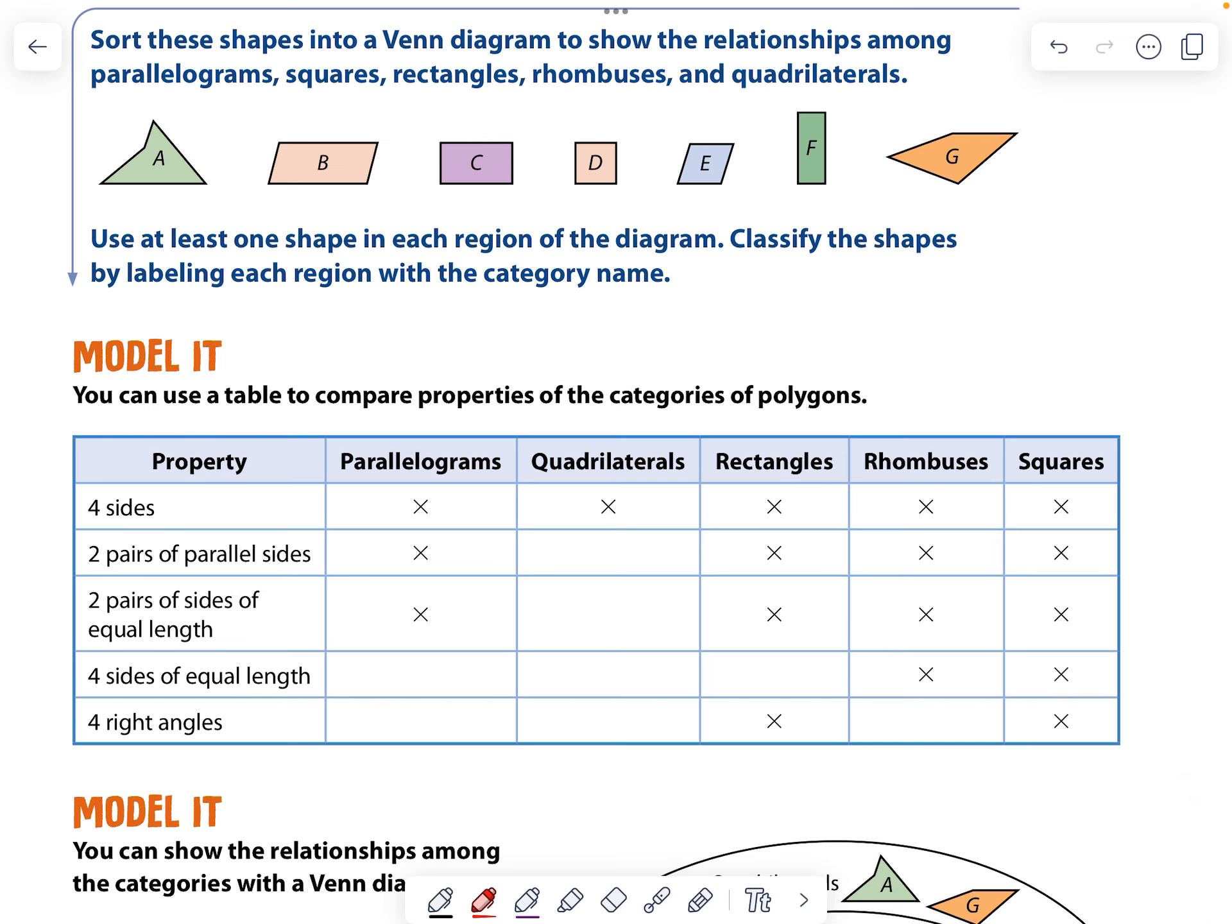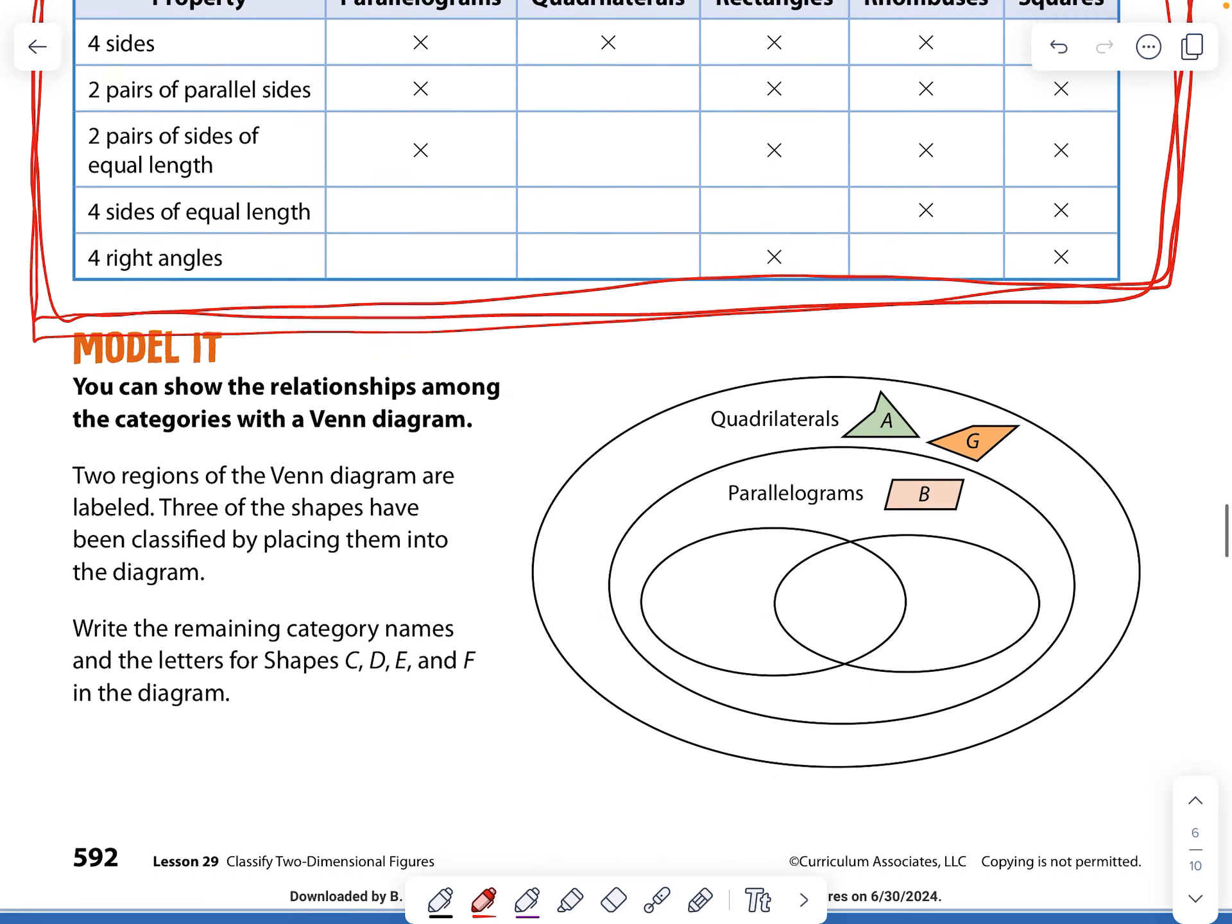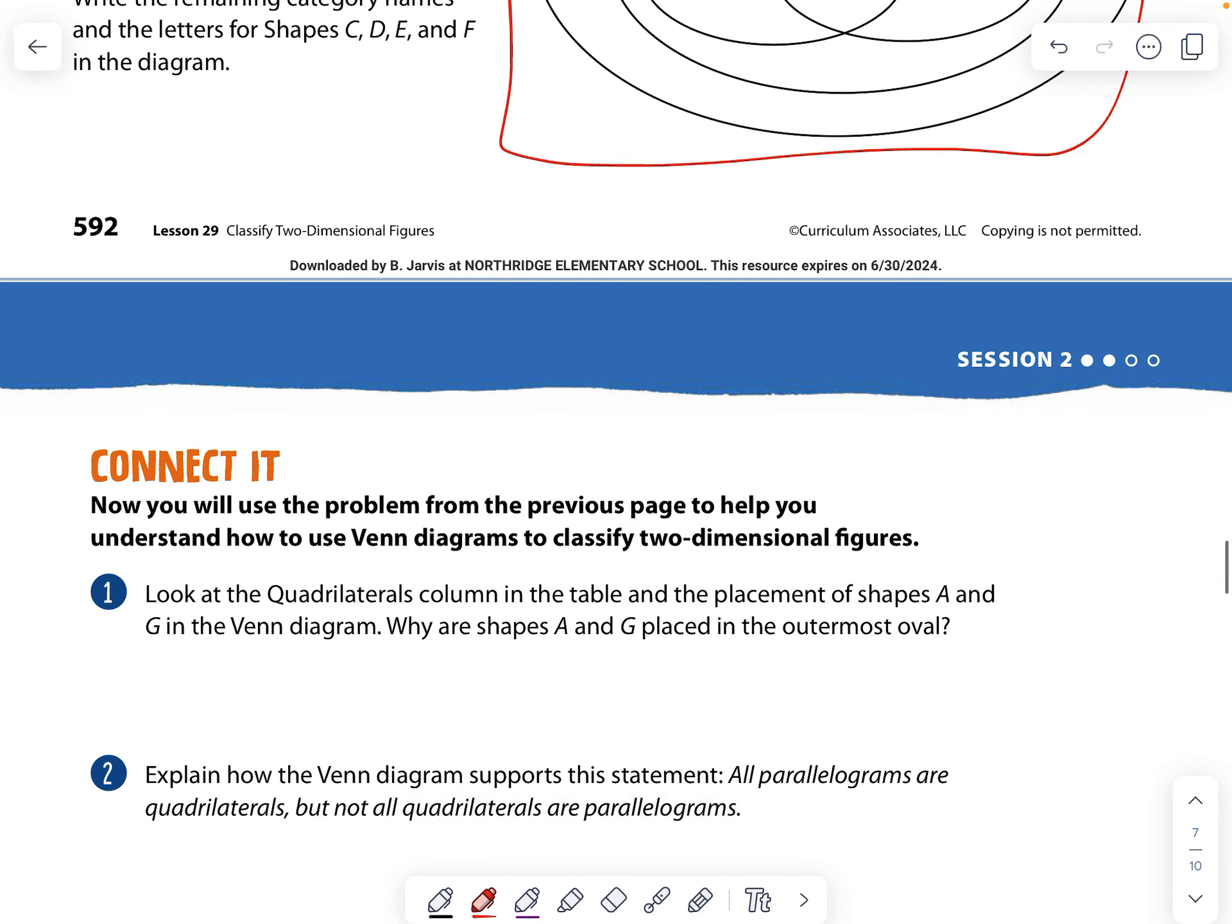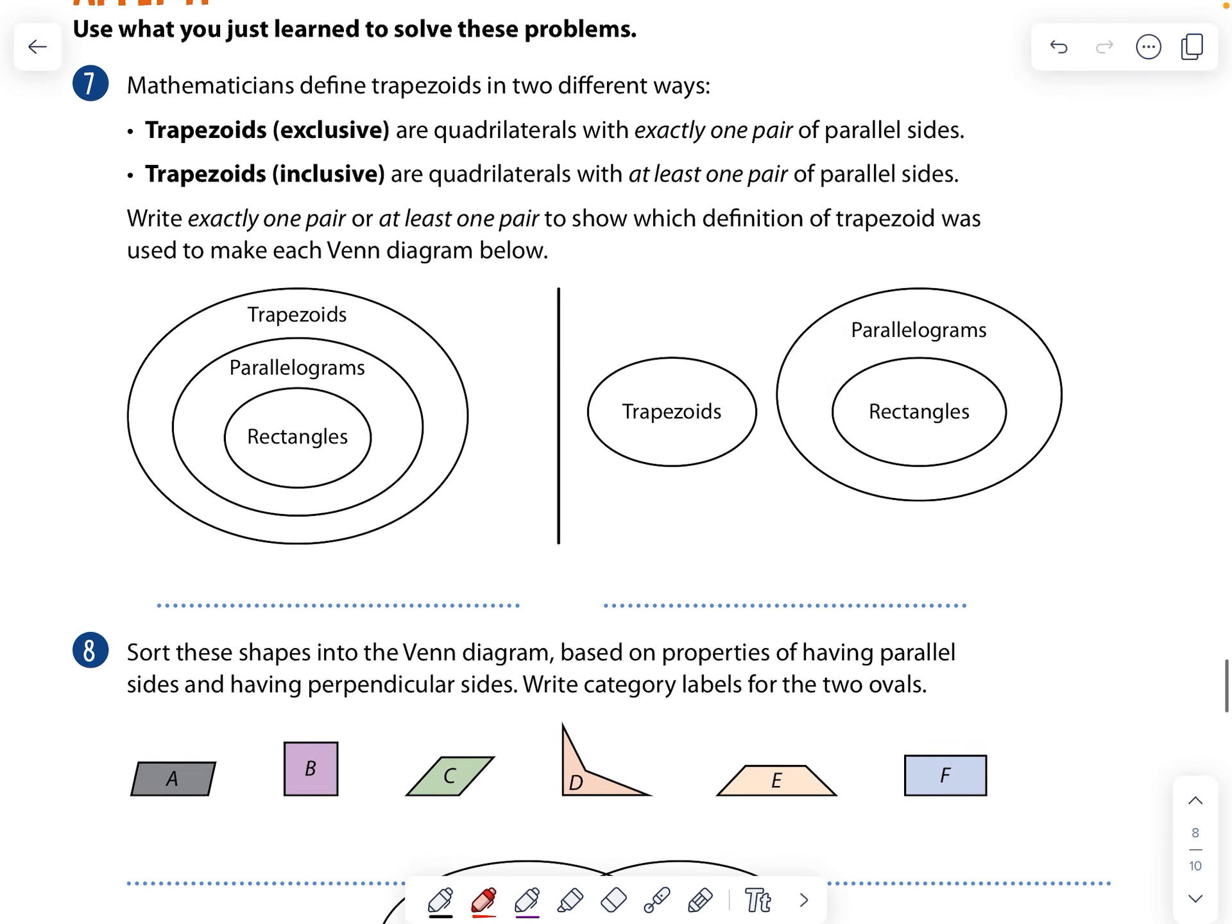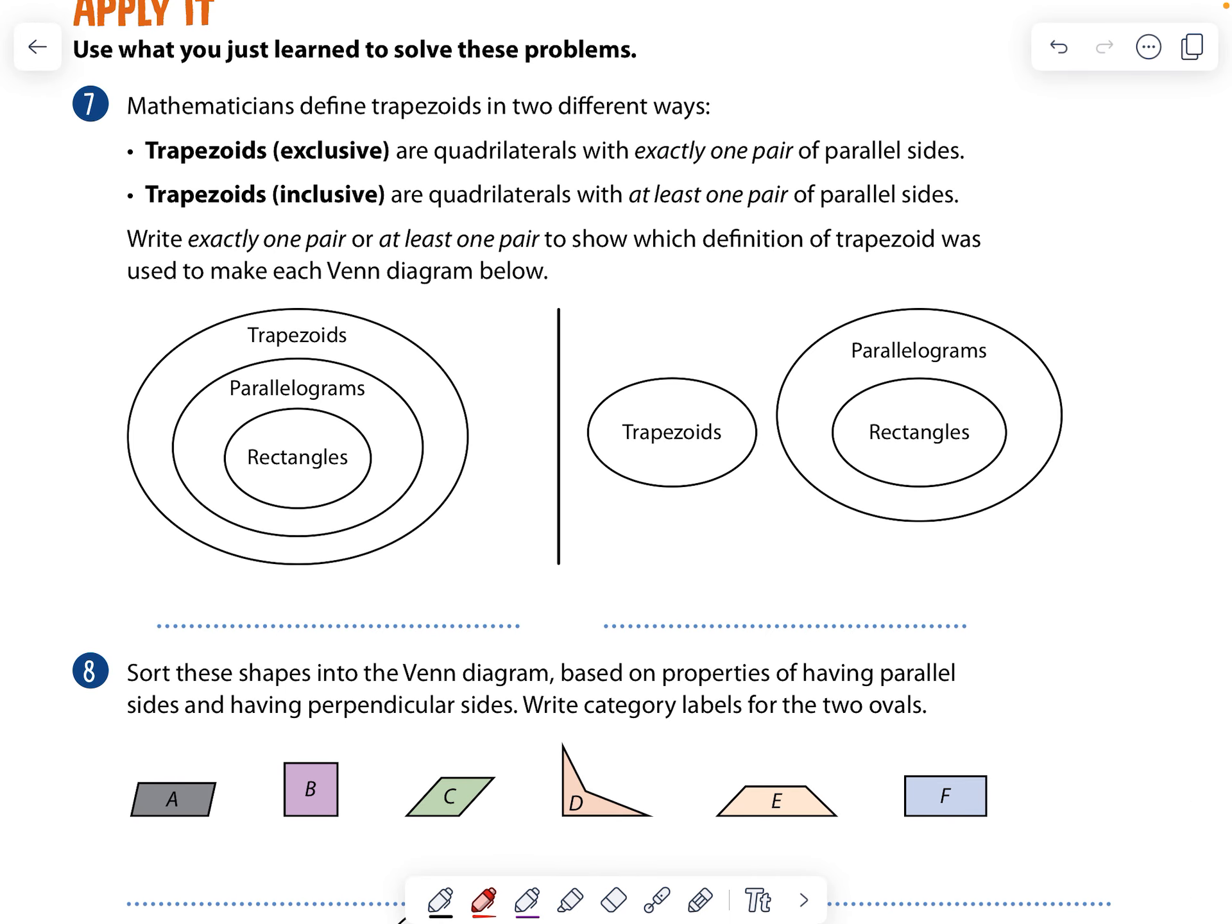Again, these are the properties of things. So please look at these to help you in your assignments. Use your book, use this video. Look, it even started doing this for us. We're going to look at this. Mathematicians define trapezoids in two different ways.